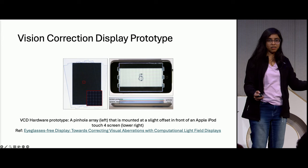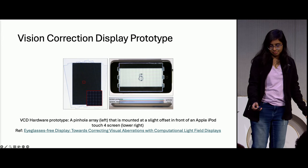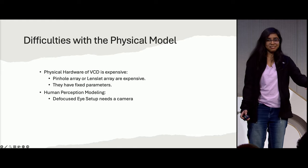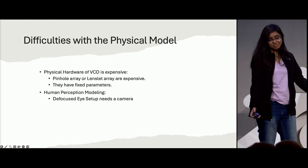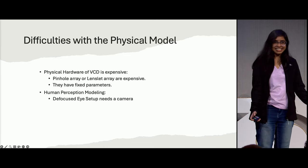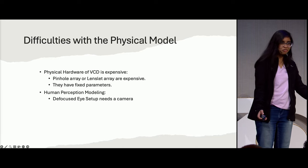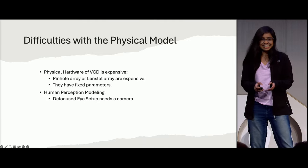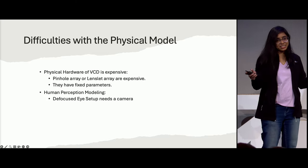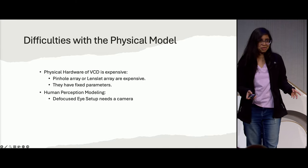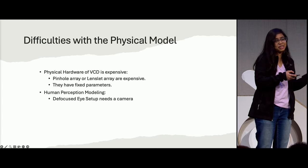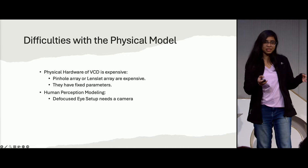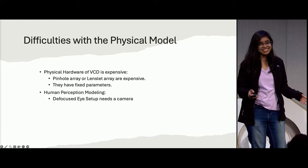There are difficulties with the physical model — also the reason we moved to simulation. Major one: it's very expensive. Even a lenslet array or pinhole array is expensive, and once made, they have fixed parameters we cannot adjust. The next issue is modeling a defocused eye — people have different vision problems, so we have to adjust cameras, focal length, and many parameters each time, and a good camera is also expensive.